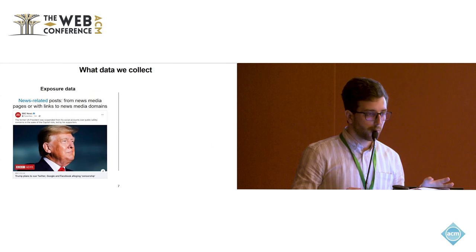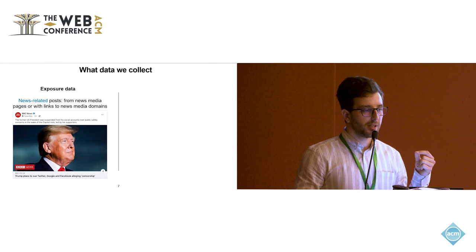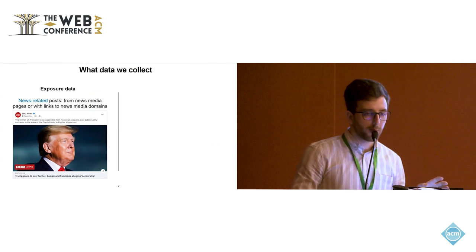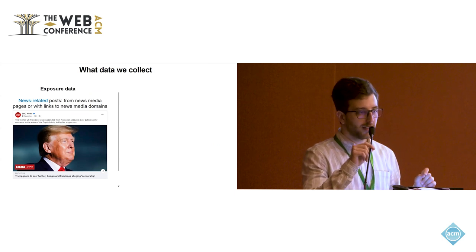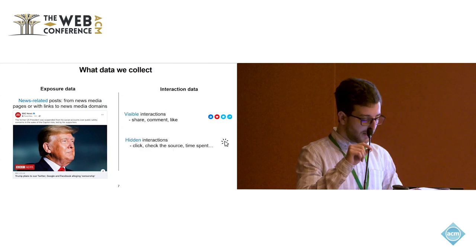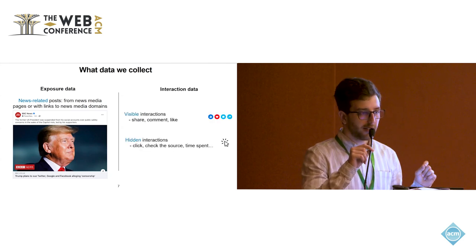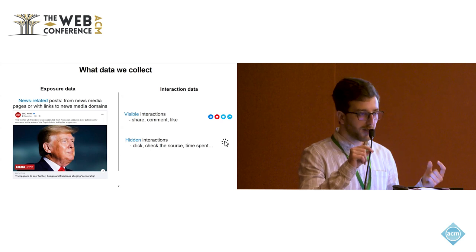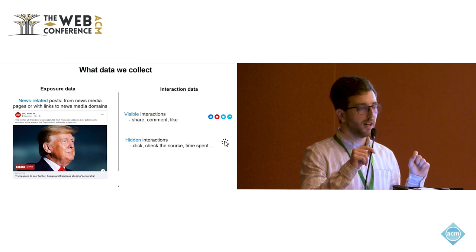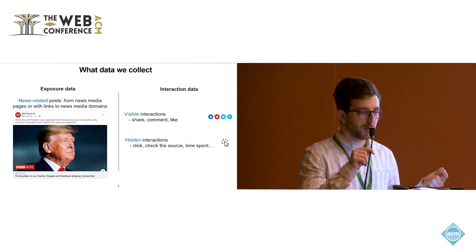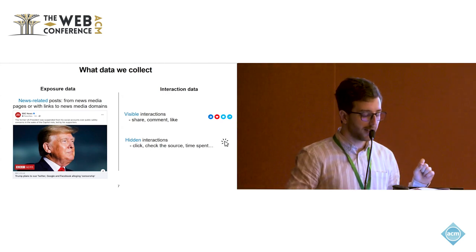What data do we precisely collect? We have two categories. The first category is exposure data, which consists of all the news-related posts users receive — basically, all posts shared by a news organization or all posts that have a landing URL to news domains. The second class of data collected is the interaction data, which includes visible interactions that are visible to a user's friends, such as like, comment, and share, and hidden interactions that are not visible to a user's friends, such as clicking on the source, clicking on the image of the post, or accessing the landing URL.